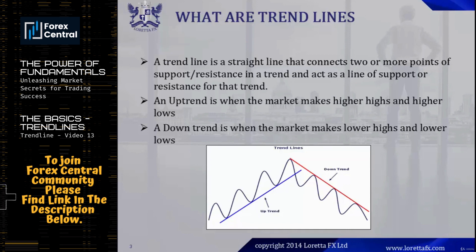An uptrend is when the market is making higher highs and higher lows, and a downtrend is when the market is making lower highs and lower lows. So here we have two examples — here we have an uptrend, and here we have a downtrend.